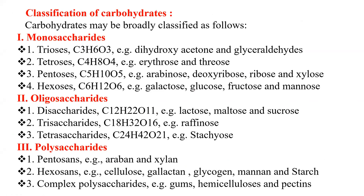Examples of different classes of monosaccharides: trioses contain only three carbon units, for example dihydroxyacetone and glyceraldehyde. Tetroses, for example erythrose. Pentoses, for example arabinose, deoxyribose, ribose and xylose. And hexoses, for example galactose, glucose, fructose and mannose.